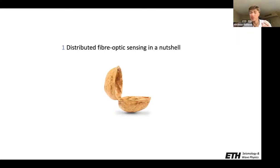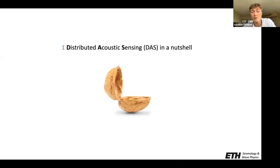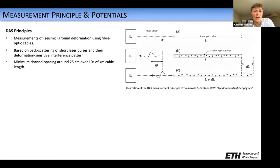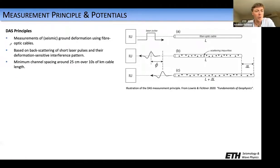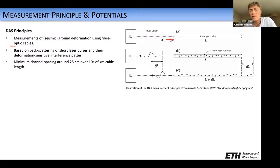Before showing specific cases, I want to briefly introduce what distributed fiber optic sensing actually is. Most often it's called distributed acoustic sensing, or DAS, which is a misnomer because it does not only record acoustic signals, but also seismic signals from elastic waves. The measurement principle of DAS is very simple. What it aims to do is measure seismic ground deformation using fiber optic cables. A laser pulse is sent into a single fiber.